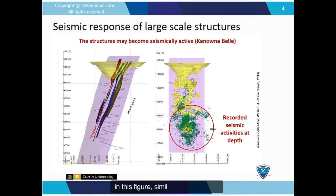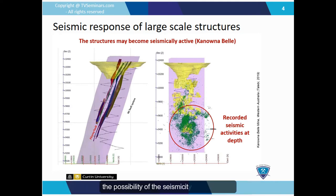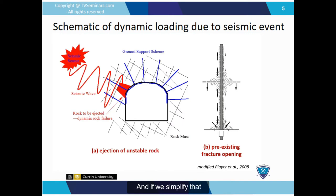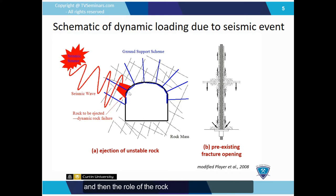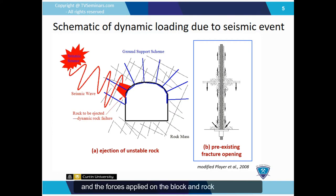Similarly, on the left you can see the ore body and major faults in the Kanowna Belle mine, and on the right figure, recorded seismicity at depths of about 1,000 meters, showing that with increasing depth, the possibility of seismicity increases. If we simplify this: we have an underground excavation in a rock mass, rock bolts support the blocks, and when seismicity occurs, these blocks tend to eject. The role of the rock bolt and support system is to keep those blocks stable. The right figure schematically shows the block, seismic load, and the forces applied on the block and rock bolt.